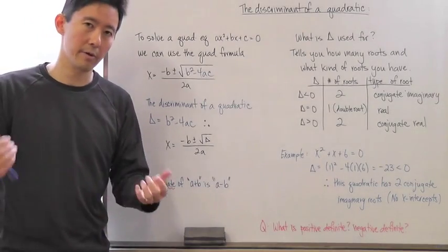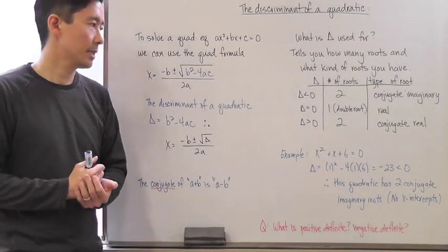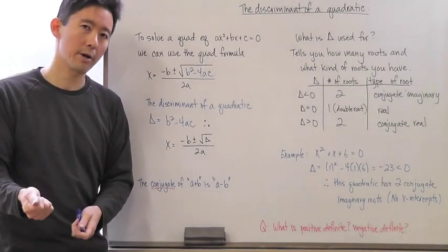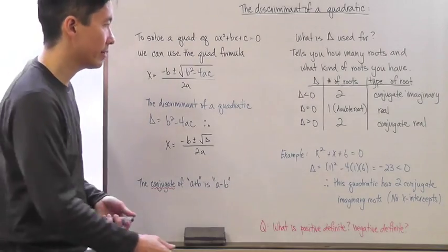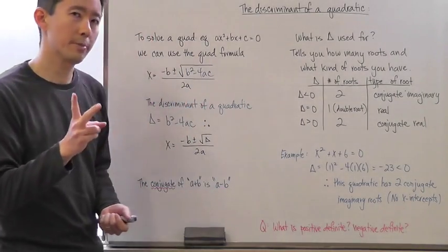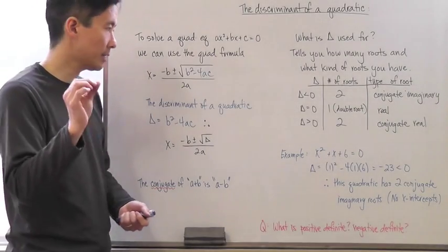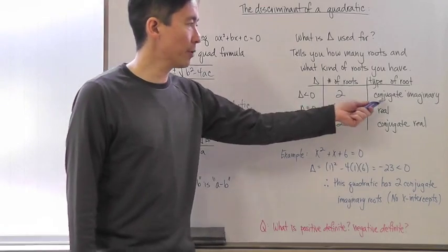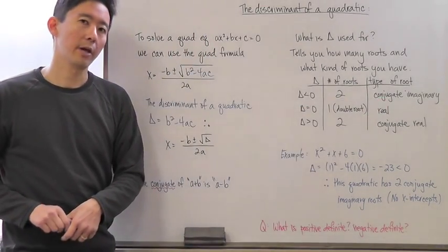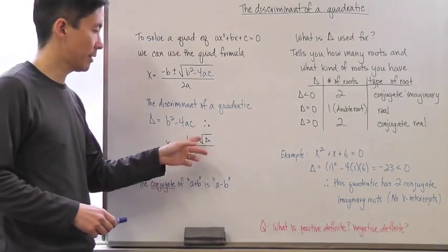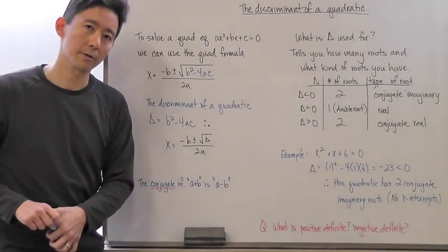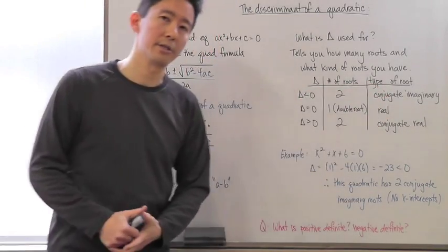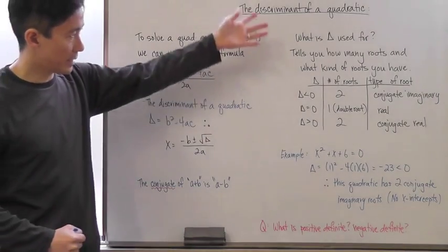The interesting case is when the discriminant is less than zero — Delta is negative. You cannot have a negative value under the radical sign, so there are two ways to interpret this: you either have zero real roots, or you have two roots that are both conjugate imaginary. Imaginary numbers arise from having a negative value under the radical sign.